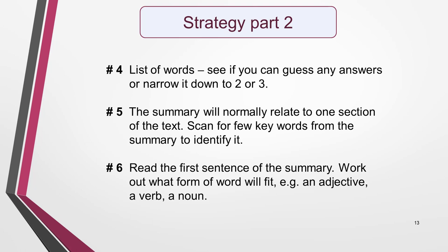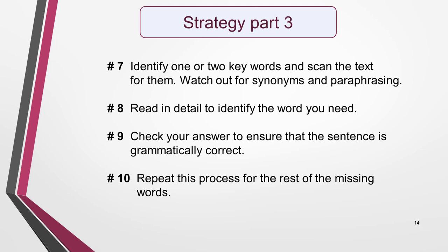Now read the first sentence of the summary with a gap in it. Try to work out what form of word will fit, such as an adjective, the past tense of a verb, or a noun. You may even be able to predict the missing word itself or a synonym. Identify one or two key words and scan the section of text for them, watching out for synonyms and paraphrasing. When you've found the part of the text with the answer in, read it in detail to identify the word you need, either in the text itself or from the word list. Don't forget to check your answers to ensure that the sentence is grammatically correct. Repeat this process for the rest of the missing words.